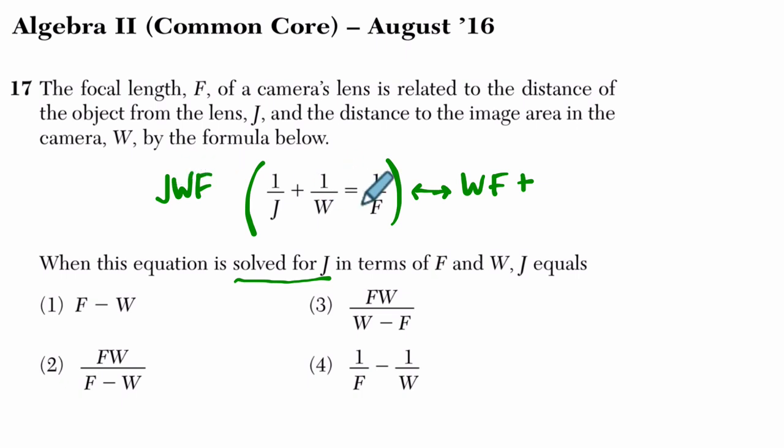j, w, f over w, the w's cancel out and I have j, f. And then j, w, f times 1 over f. The f's cancel out and I just have j, w.